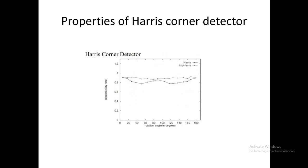Here is an example: we take a picture, find corners on it, then rotate it and find corners again, measuring the repeatability. From the figure we can see that as the rotation is varied all the way up to 180 degrees, the repeatability rate remains almost constant. Repeatability is the ability to find the same corner in the rotated image. Both the Harris detector and improved Harris detector are invariant to rotation.